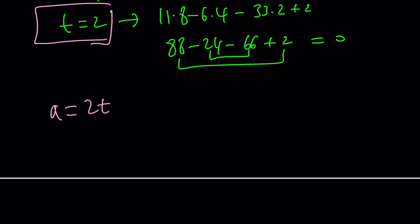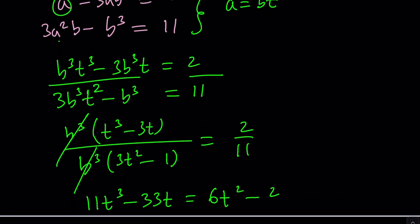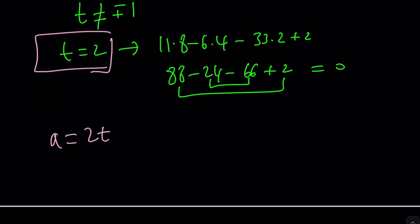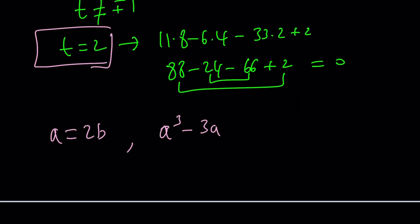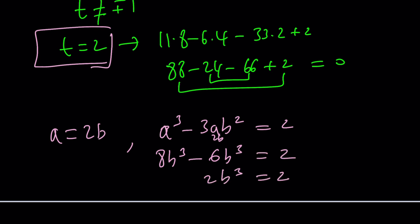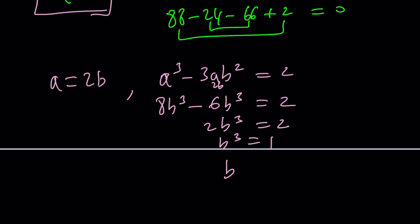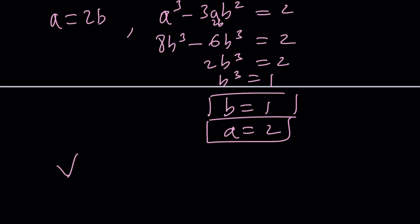Since t = 2 and a = bt, we have a = 2b. Substituting into a³ − 3ab² = 2: 8b³ − 6b³ = 2, so 2b³ = 2, giving b³ = 1, and in the reals b = 1. Therefore a = 2, and the cube root of (2 + 11i) is 2 + i.